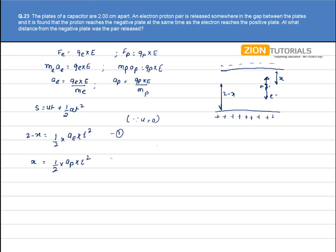Taking the ratio of the first and second equations, the ½ cancels. Since both particles reach their plates at the same time, t² also cancels. So we have: (2-x)/x = acceleration of electron divided by acceleration of proton, which equals (Q_E × E / mass of electron) divided by (Q_P × E / mass of proton).